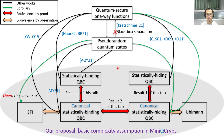In this last picture, we summarize the equivalences established in this work, represented by the red and orange rows. This picture also summarizes our current knowledge towards exploring basic complexity assumptions in MiniQCrypt. That's all I wanted to say — thanks for listening.